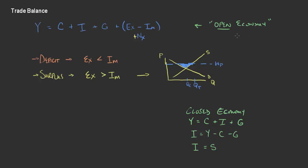In the open economy we've got the same thing, but the difference is now Y is equal to consumption plus investment plus government spending plus net exports. If we solve for investment the same way, investment is equal to output minus consumption minus government spending minus net exports. This portion — output minus consumption minus government spending — is still savings in the economy.